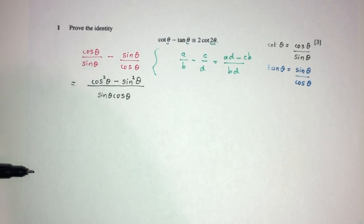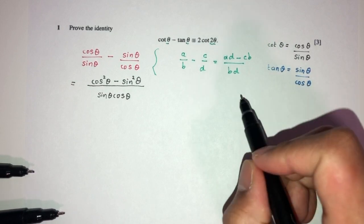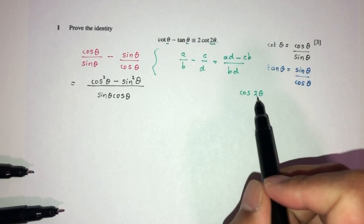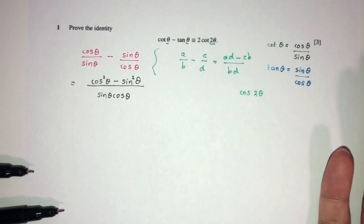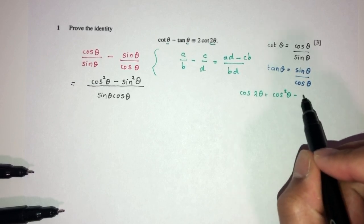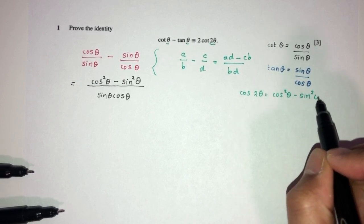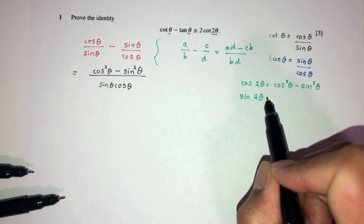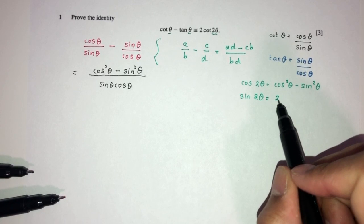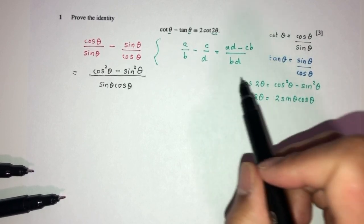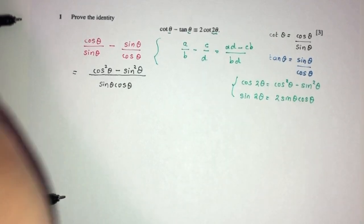So now we have been able to kind of simplify this to that. And now we have to see what else can we do. But remember, here we have double angle. So let's write down the double angle formulas that we know for sin and cos. We know that cos 2θ is equal to cos²θ - sin²θ. Similarly, we do know that sin 2θ is equal to 2 sin θ cos θ. So these are things that we should know for the double angle formulas.